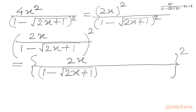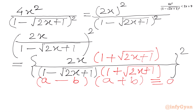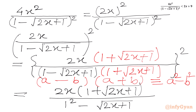Now we will rationalize the denominator by multiplying numerator and denominator by the conjugate: 1 + √(2x+1). If we consider 1 as a and √(2x+1) as b, then the denominator is (a−b)(a+b), which gives us the difference of two squares form: a² − b².